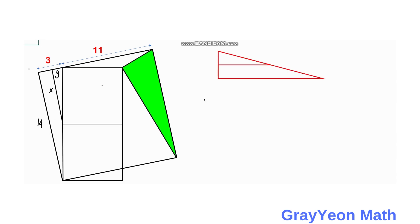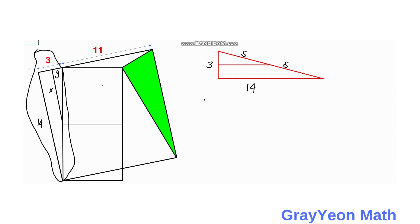We isolate this right triangle. This becomes 3 and this becomes 14, and the hypotenuse we label as s. The short length is y and the longer length is x. For the value of x, we have x over s equals 14 over 2s, so we can cancel s and we get x is equal to 7 units.